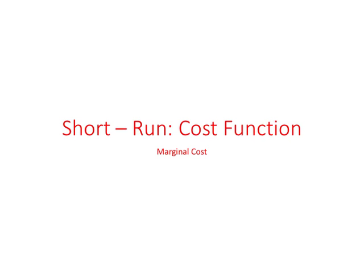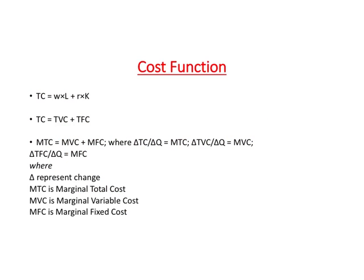Here is the basic equation we have been using on the cost side: total cost can be broken down into labor and capital cost. Since labor is the variable input, the labor cost is called the total variable cost or TVC. Since capital is the fixed input, the cost associated with capital is called total fixed cost or TFC. So total cost can be broken down into TVC and TFC.